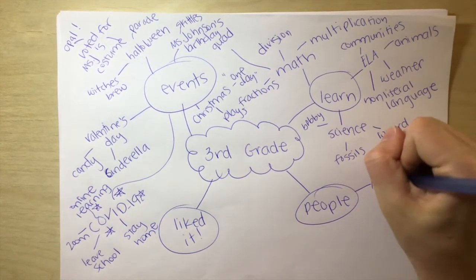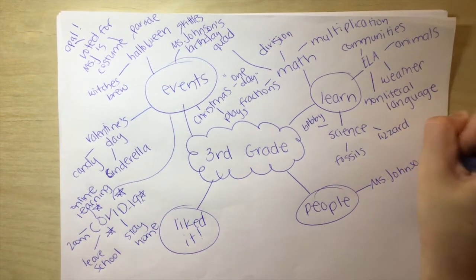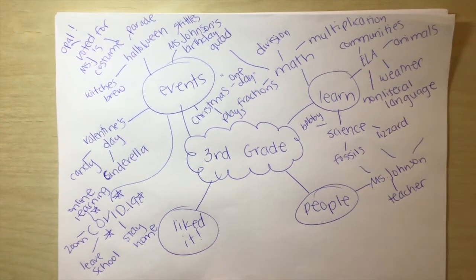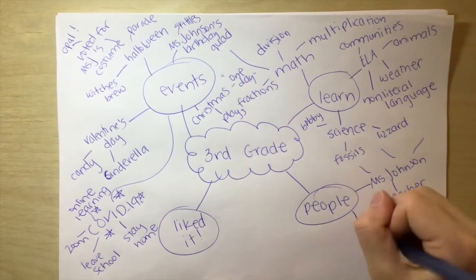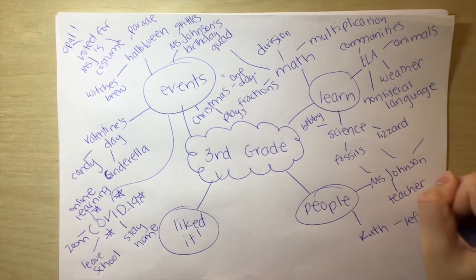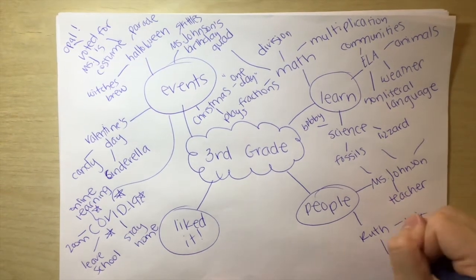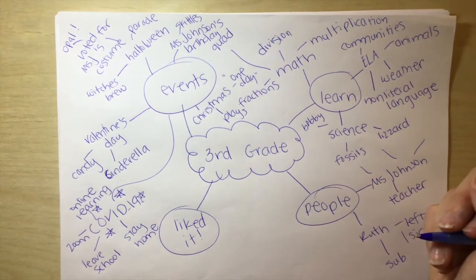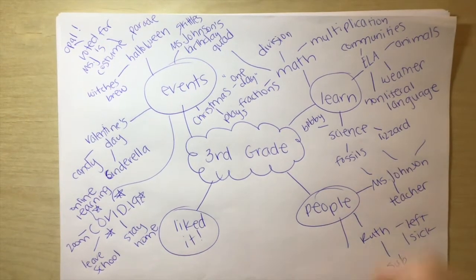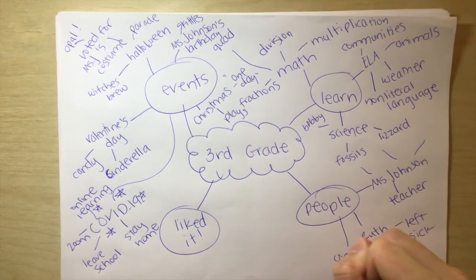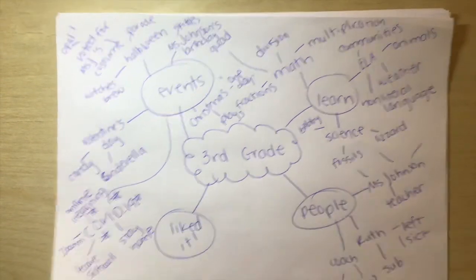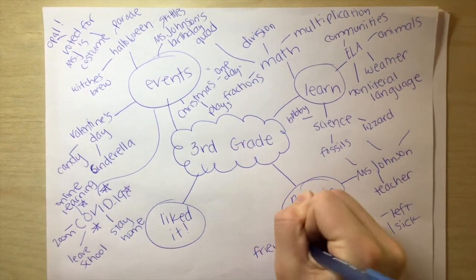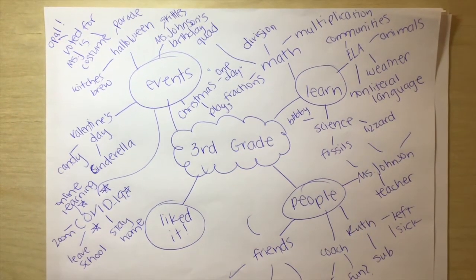So go ahead and start copying some of those things down. And then we're going to go to people. Ms. Johnson is a person. She was your teacher. How do you feel about her? Go ahead and write some things down. Ms. Ruth, remember she left. She was sick. So we had a sub, which was sad because we love her. Who are some other people? We had Coach who did PE. Do you like him? It was fun, right? Maybe some friends. Who are some friends? Think of some friends.